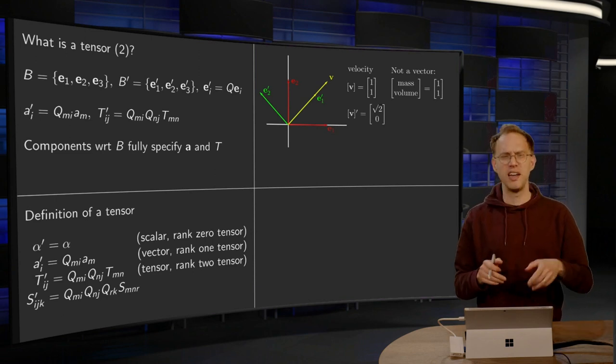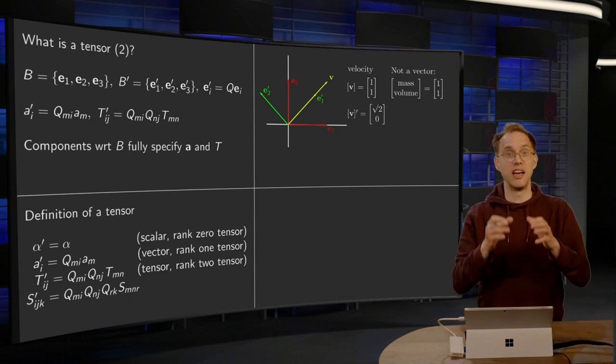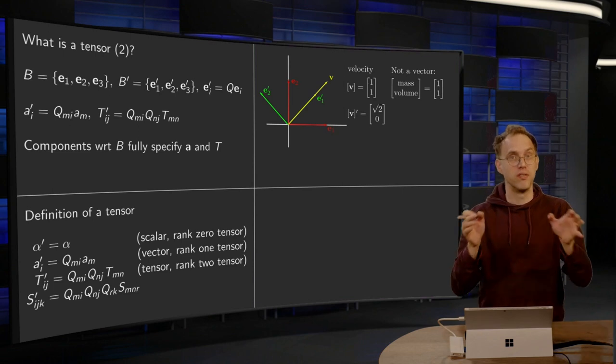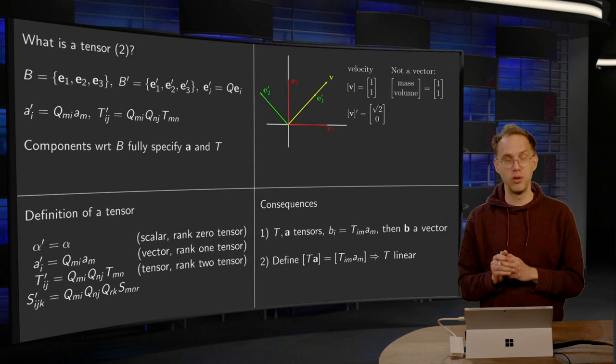And then finally, you might wonder, okay, we had one definition of a tensor, which had to do with linearity. And now we have another definition, which has to do with transformation rules. It is actually the same. So let's take a short look at that.